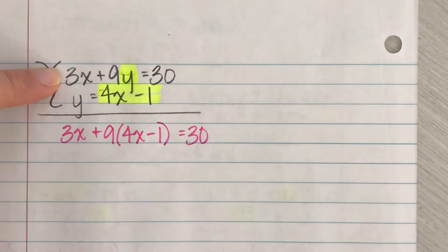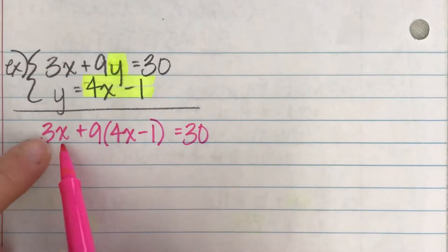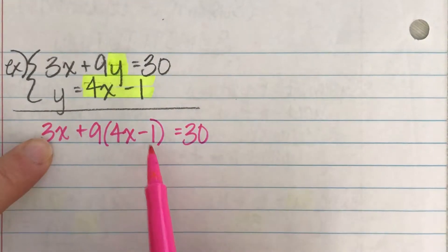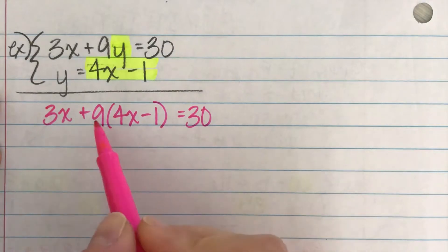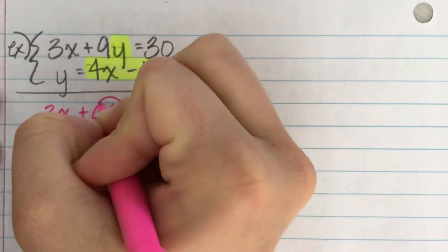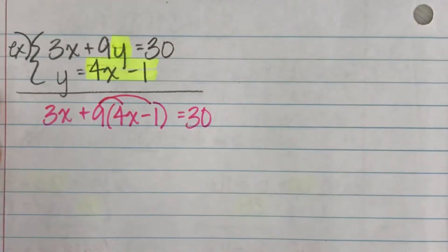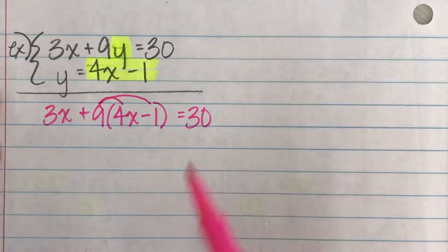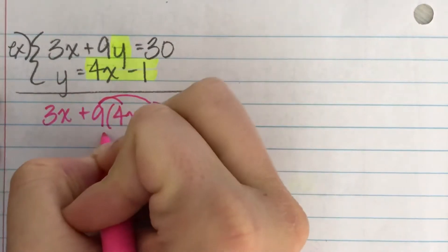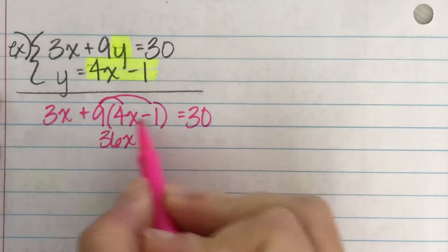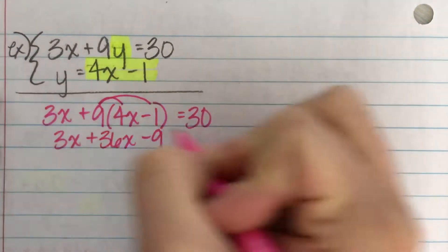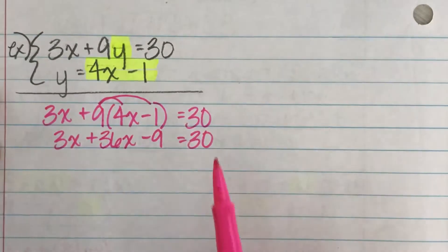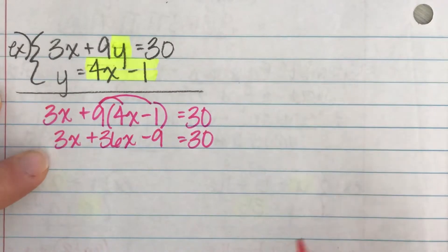So I'm going to go 3x plus nine, but then instead of the y, I'm going to put the formula in its place for x minus one equals 30. It is still a one variable equation. Now I've gotten to where I don't have x's and y's anymore. I have all x's. We're going to go back to algebra one basics. If you see parentheses, you're going to check for distributing, which this one does have distributing that has to happen before you could start messing with those. The other two problems didn't have anything to distribute. So I could skip that step, but here I can.